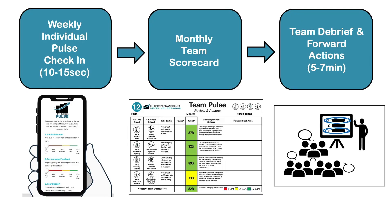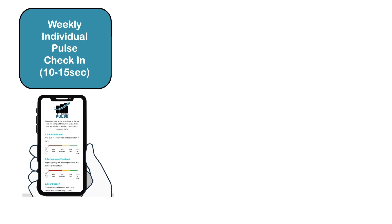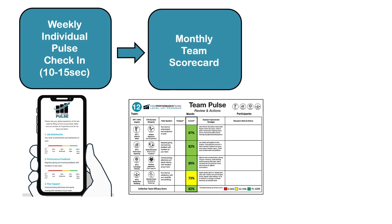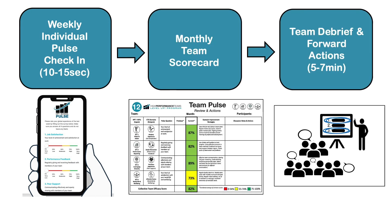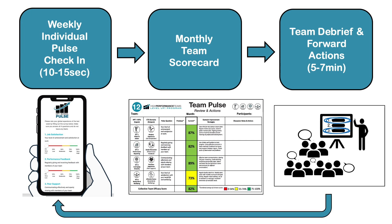The team pulse system is one of the simplest, easiest parts of the high performance teaching team activity cycle — and also one of the most powerful. It effectively has three components: a weekly individual pulse check-in, which is a quick survey taking 10 to 15 seconds; a monthly group or team scorecard; and then a debrief conversation where we plan forward actions. This happens in a continuous cycle over the year.